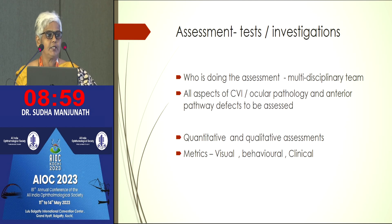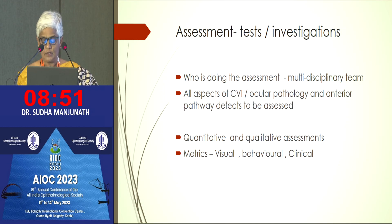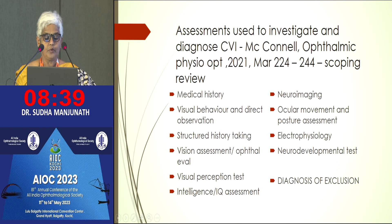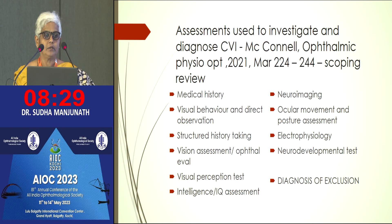Assessment for CVI is best done by a multidisciplinary team, and all metrics such as clinical examination, visual assessment, and visual behavior assessment have to be done. This review article found that medical history, examination of behavior, and structured history were all techniques used to investigate and diagnose CVI, either together or in part.